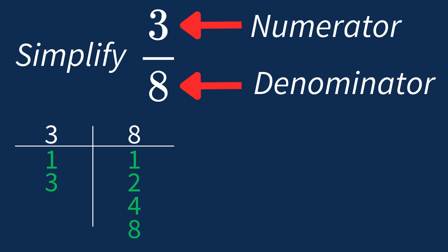So in this case, the largest common factor is 1. This means we'll divide both the numerator and denominator by 1 to see if anything changes.